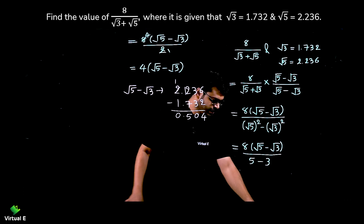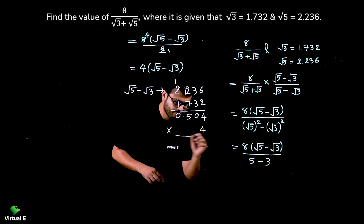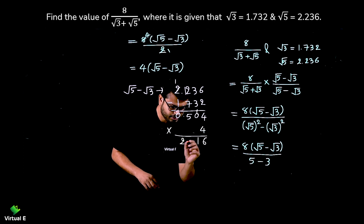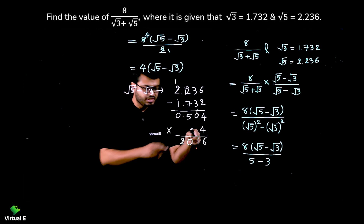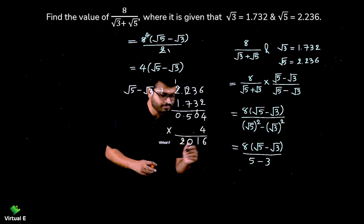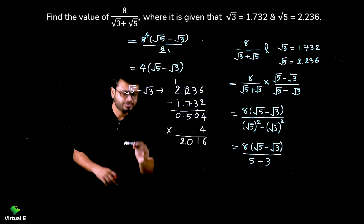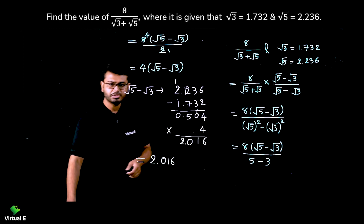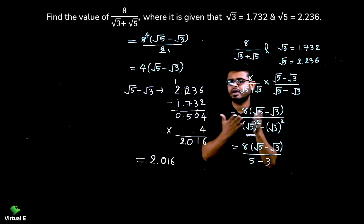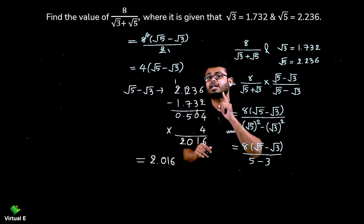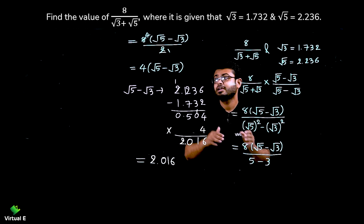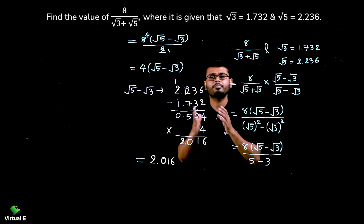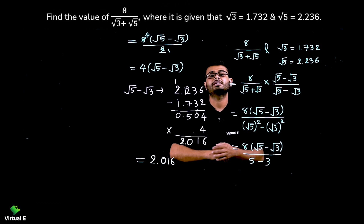Now multiply 0.504 by 4. Working it out: 4 times 0.504 gives 2.016, remembering to place the decimal point correctly with three decimal places. So the final answer is 2.016. This is how we solve questions where root 3, root 5, root 7, or root 2 values are given — first rationalize the denominator, then substitute, and be careful with decimals.